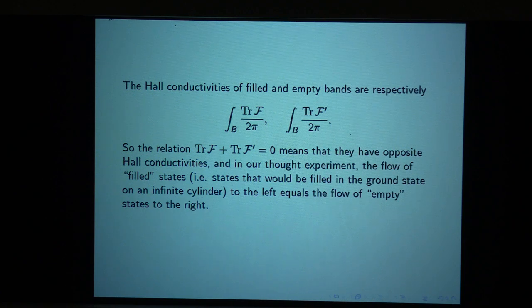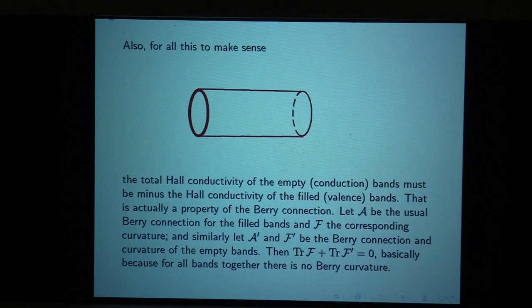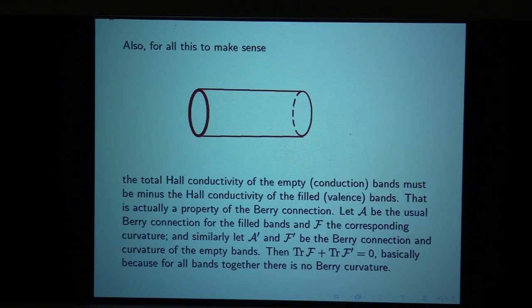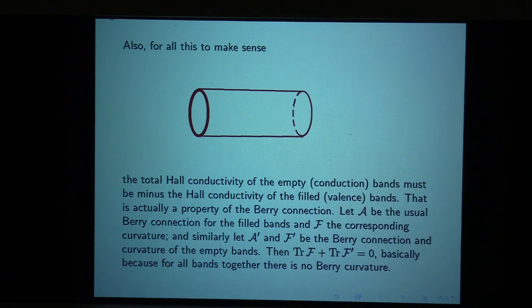Regarding the previous question: the edge states can't all cover the whole Brillouin zone, but there could be branches of edge states that do cover the whole zone. There have to be some branches that end. Is there anything preventing them from wrapping around the whole zone before going into the upper band? As far as I know, nothing prevents that. Such a branch would actually be a spiral — it would pass the Fermi surface only once. The invariant is that k equals the number of right-moving minus left-moving crossings through the Fermi surface.